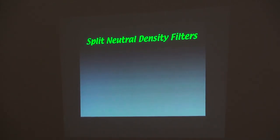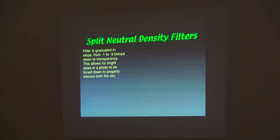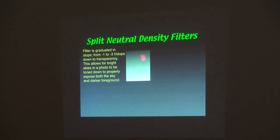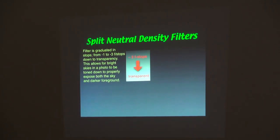This one — a split neutral density filter. That's exactly the one I just told you about, except it's not all this color. It graduates from clear up to dark. This is minus two f-stops on one end, and this end is transparent. Why would you need that?